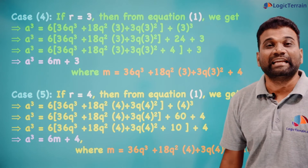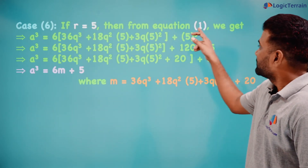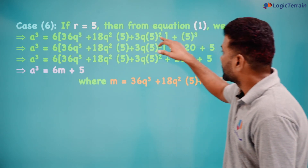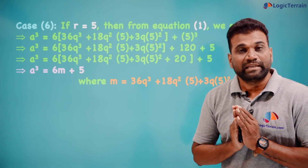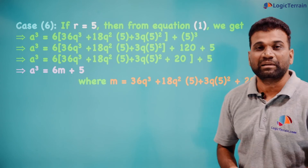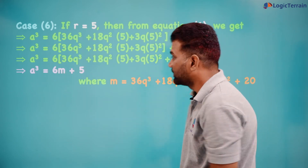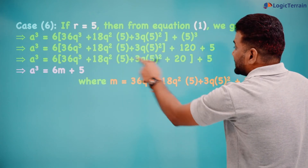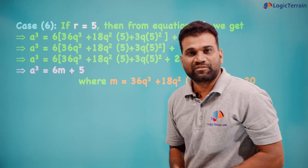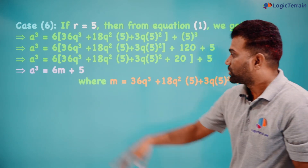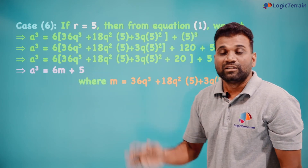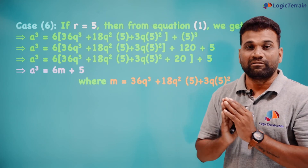Case 6: if r = 5, substituting into Equation 1 gives a³ = 6(...) + 5³. Now 5³ = 125, which we split as 120 + 5, since 120 is a multiple of 6. Taking 6 common: a³ = 6m + 5, where m is the entire bracket expression. The cube of the positive integer is of the form 6m + r, here r is 5. For all r values we have shown the cube is of the form 6m + r.